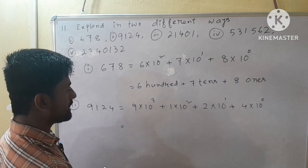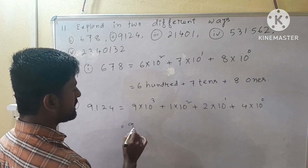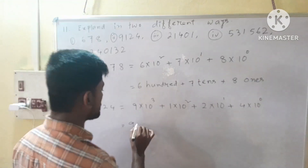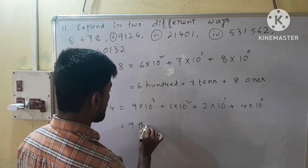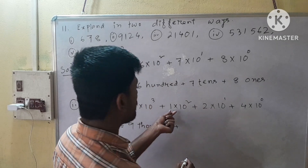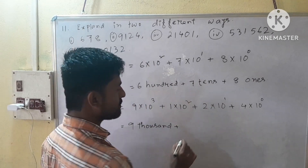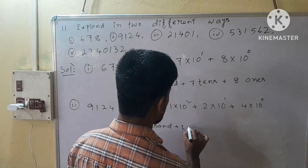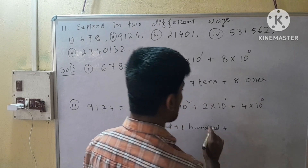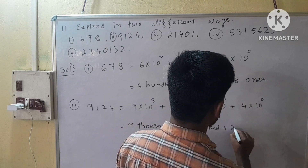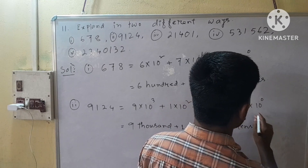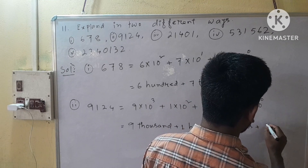We express it in another different way: 9 into 10 to the power 3 means 1,000, so 9,000; plus 1 into 10 squared means 100; plus 2 into 10 to the power 1 means 2 tens; and 4 into 10 to the power 0 means 1, so 4 ones.